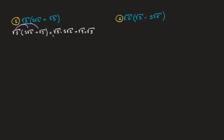Looking at the first product, since multiplication is commutative I can change the order of the terms inside this multiplication. In other words I can rewrite that as 5 times the square root of 3 times the square root of 2.